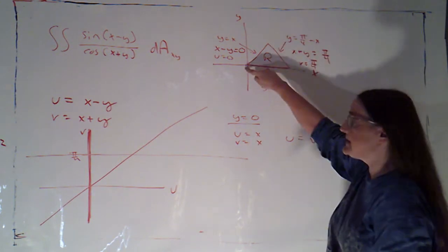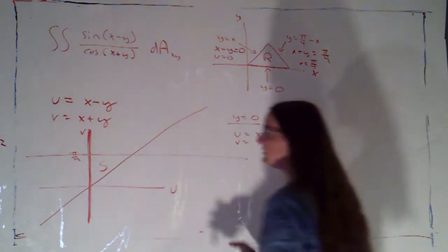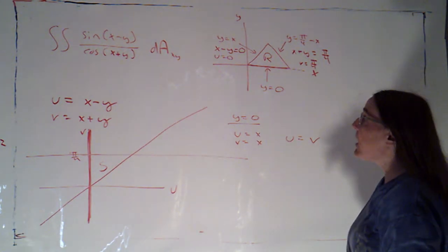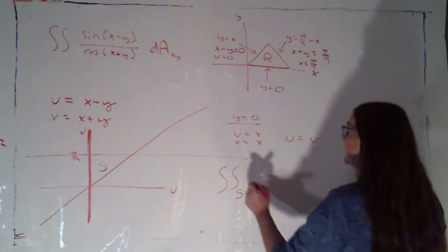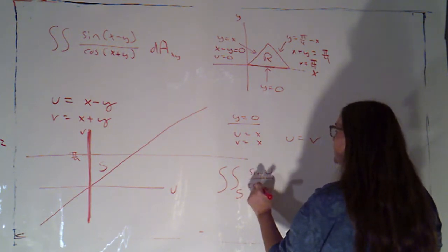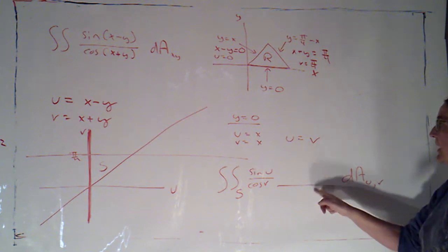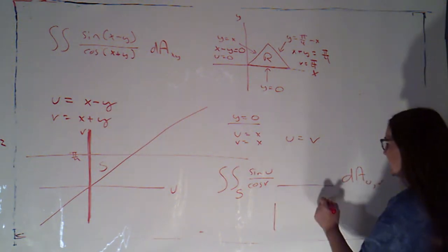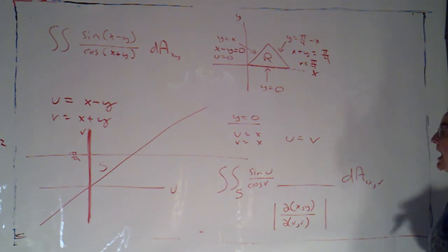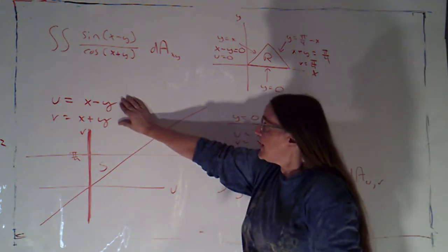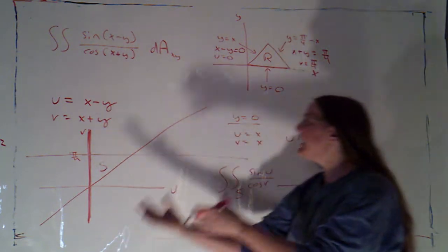So the three boundary lines in R correspond to these three boundary lines in S. This triangle is my region S. Now I'm going to set this up integrating over S: sine of u over cosine of v, times a scaling factor, dA in the uv-plane. That scaling factor is the absolute value of the Jacobian — partial (x,y) over partial (u,v). Just like our last example, these equations give me u and v in terms of x and y, and I want the opposite.